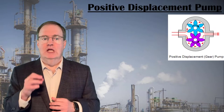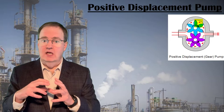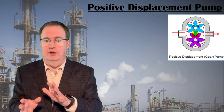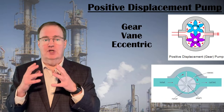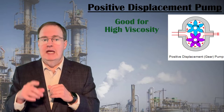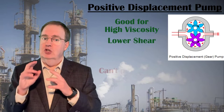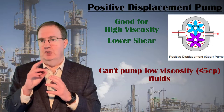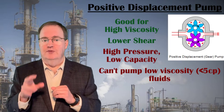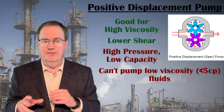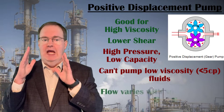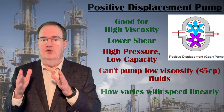A positive displacement pump creates a cavity at the feed point, seals that cavity, and displaces it to the exit point, then makes the cavity shrink or disappear to push out the fluid — shown here as a gear pump, but vane pumps and eccentric rotary pumps operate the same way. Positive displacement pumps handle high-viscosity fluids well and are relatively low shear, but low-viscosity fluids slip past the gears or vanes. PD pumps can generate higher pressures but lower flows than similar-sized and priced centrifugal pumps. Their pump curves are essentially rectangular, delivering constant pressure for any flow, and the flow delivered will be linear with pump speed for a variable speed pump.